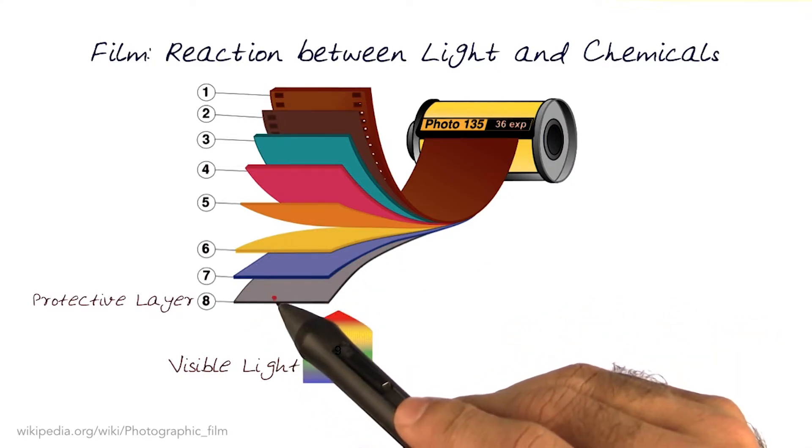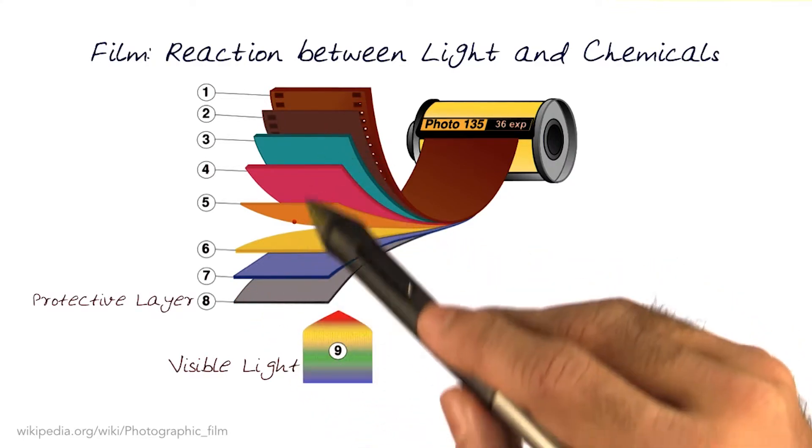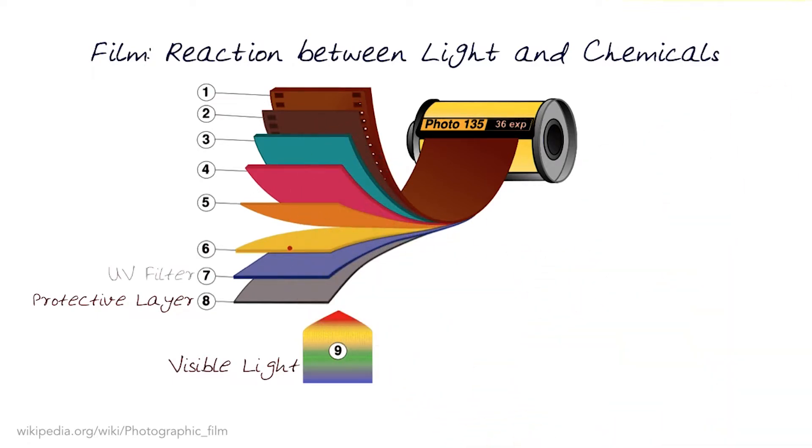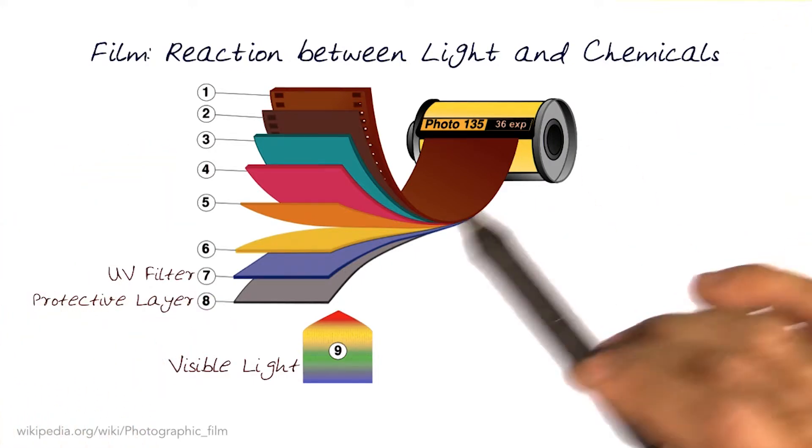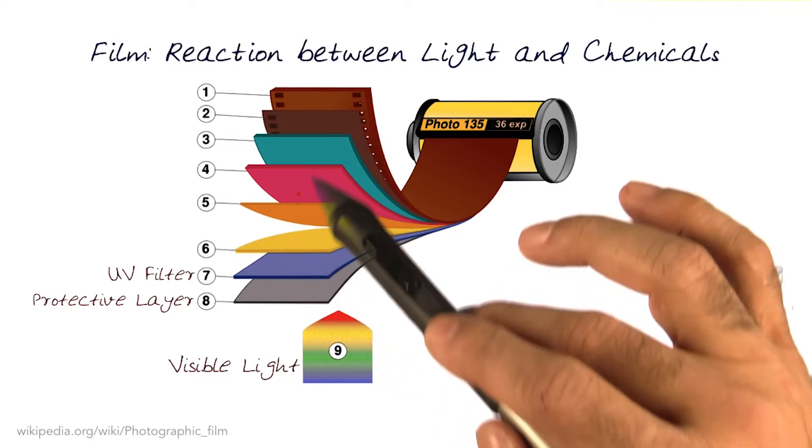First layer is a protective layer. We need to protect all of these light sensitive layers that are going to exist. In most types of cameras and films like this, we also put in a UV filter. The UV filter is there to make sure that the right kinds of light and not damaging lights are hitting the different types of sensors.